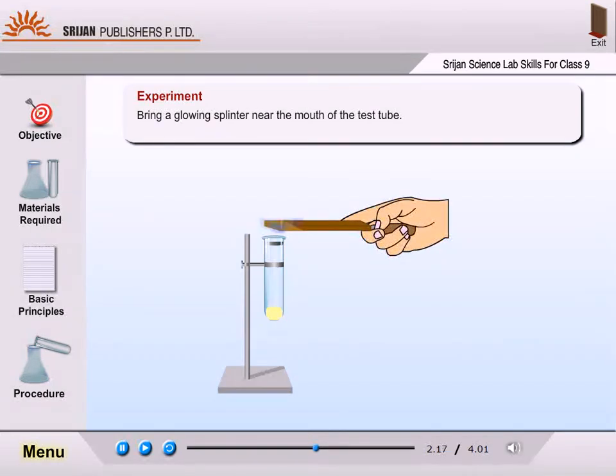Bring a glowing splinter near the mouth of the test tube. Glowing splinter bursts into flame. The evolved gases contain oxygen gas.